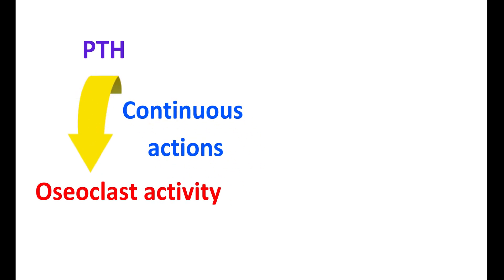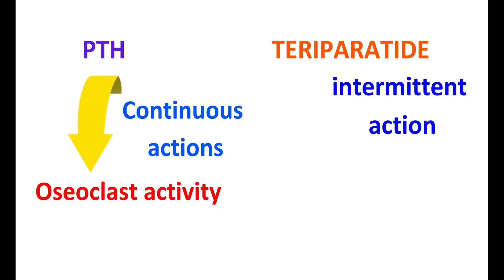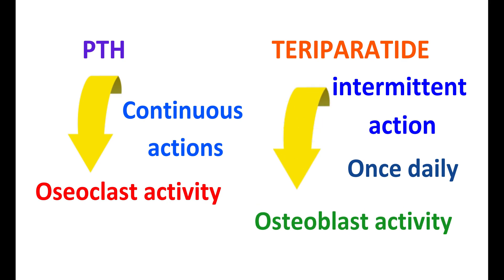Parathyroid hormone is an endogenous mediator that acts continuously on the body, mainly increasing osteoclast activity. Osteoclasts are responsible for bone resorption, leading to bone breakdown and mineral release. Teriparatide, on the other hand, shows intermittent action. Since it is given as a once-daily low dose, it cannot act continuously, and therefore it mainly enhances osteoblast activity, resulting in increased bone formation and improved bone mass.